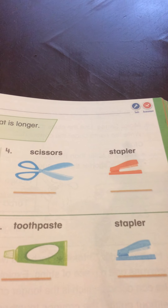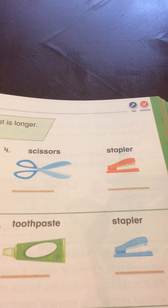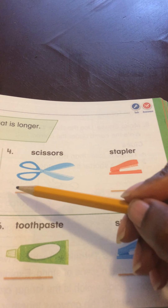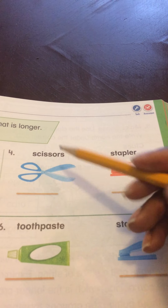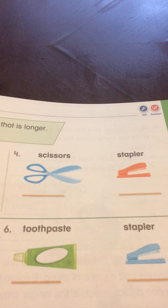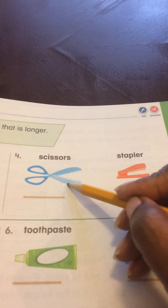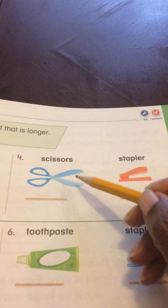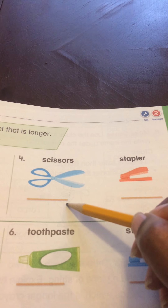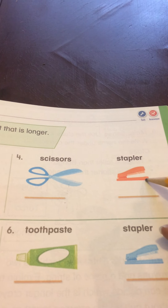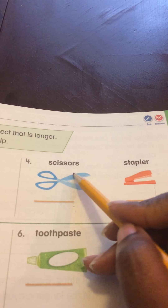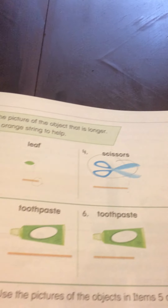Let's take a look at the scissors and the stapler. Again, they're lined up evenly on this end. Then the scissor goes beyond or past the string. The stapler does not. Therefore, the scissors is longer.